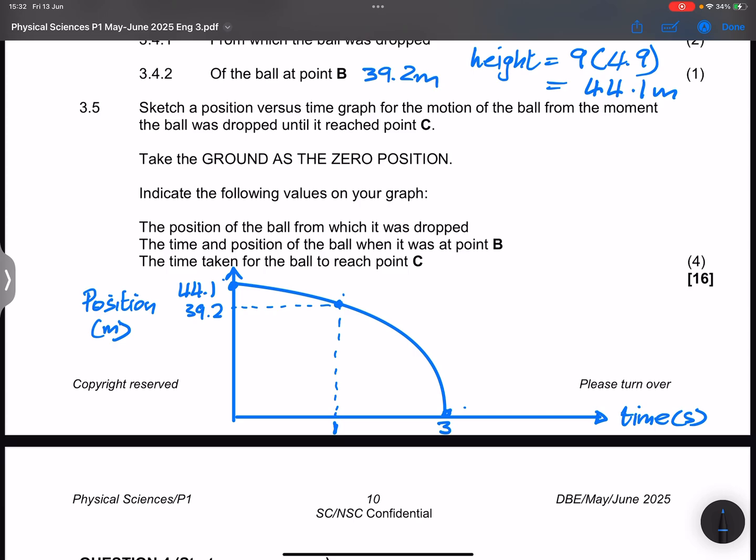Now, of course, this drawing is with the assumption that I've taken upwards as positive. If you wanted to maintain downwards as positive, what your graph is simply going to look like, it's just going to be a reflection of itself around the time axes. So this is what your graph would look like. That would be minus 44.1. That would be minus 39.2. And you'll have zero over there. And this would be our time. One second. And this would be three seconds.